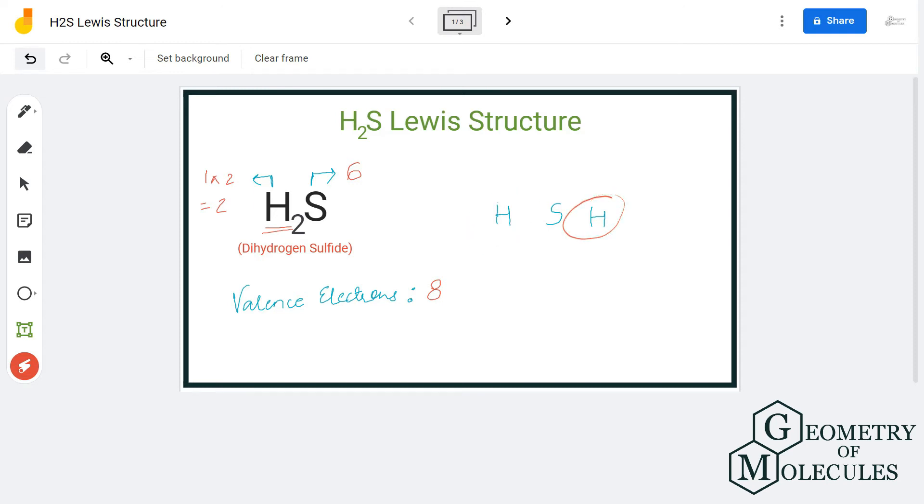Hydrogen needs two valence electrons to complete its octet, and it will share one electron of sulfur to do that. So we have two electrons between S and H on both sides. Here we have used four valence electrons out of eight.